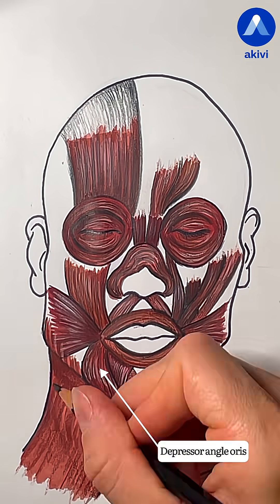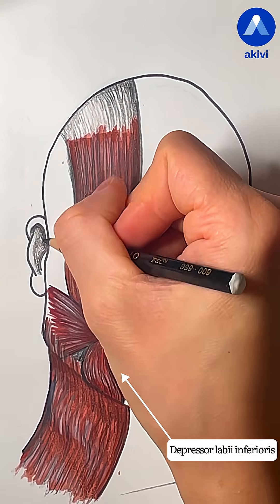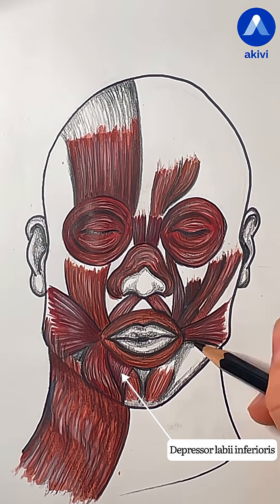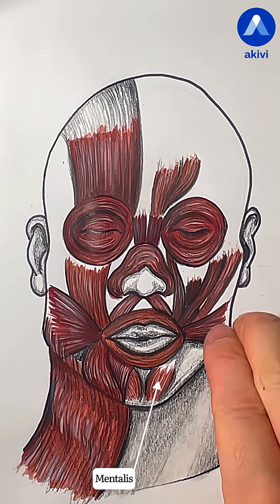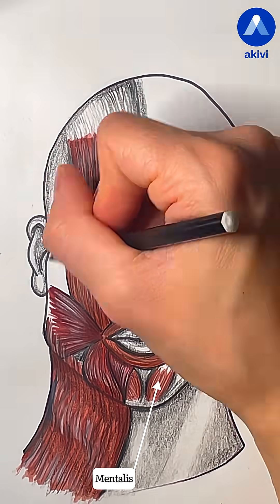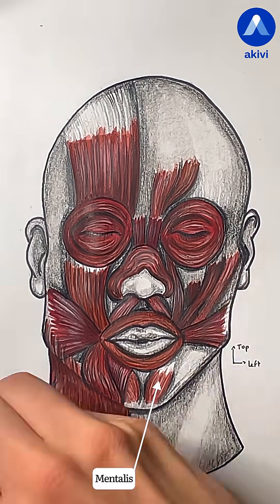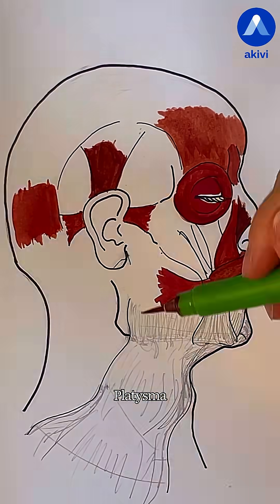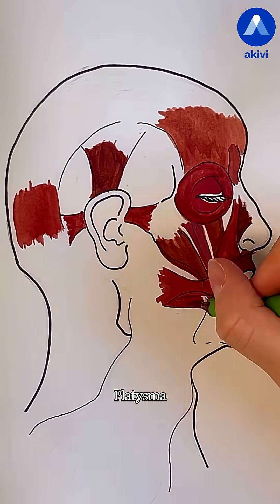The depressor anguli oris pulls the corners of the mouth downward. The depressor labii inferioris pulls the lower lip down and outward, giving the expression of disgust. The mentalis consists of two small muscle bundles located in the chin on either side of the midline; it helps raise the chin and the lower lip.